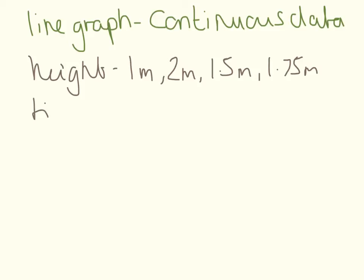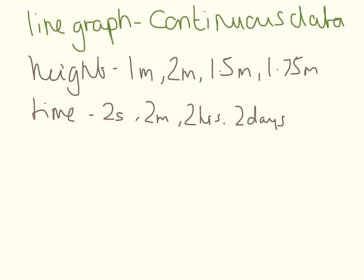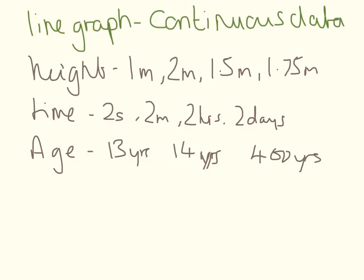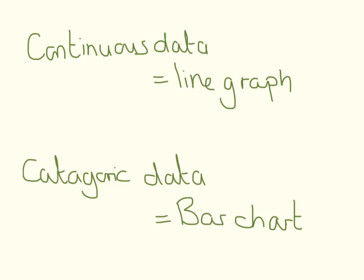With continuous data we can have height, and we can have time — because you can be 2 seconds, 2 minutes, 2 hours, 2 days, or 2 years, or any number in between. We could also have age: you could be 13, 14, or any number in between. So for continuous data, where you can have numbers in between, we draw a line graph.